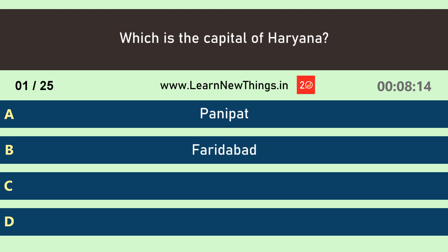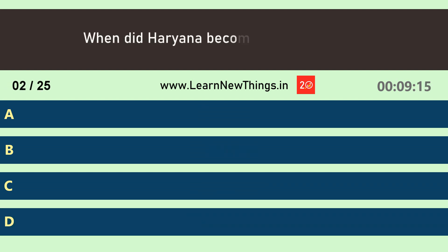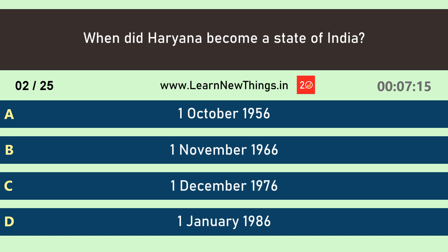Which is the capital of Haryana? When did Haryana become a state of India? Answer: 1 November 1966.